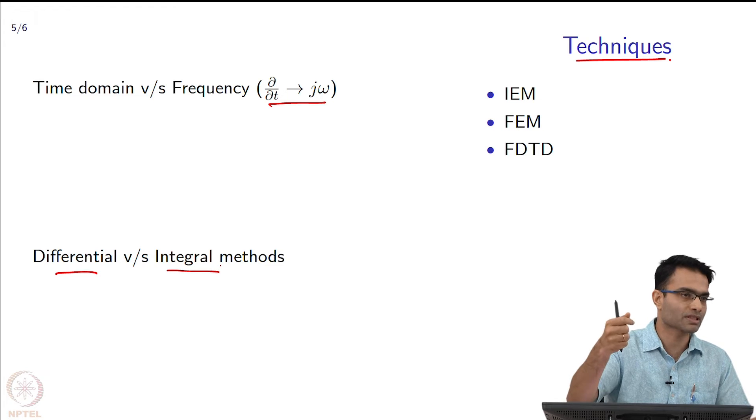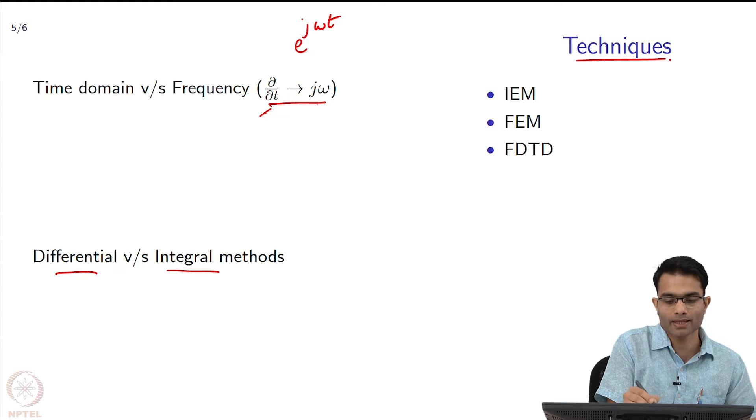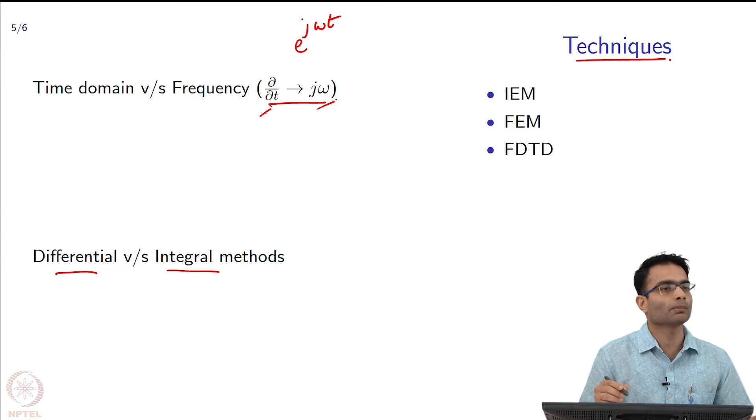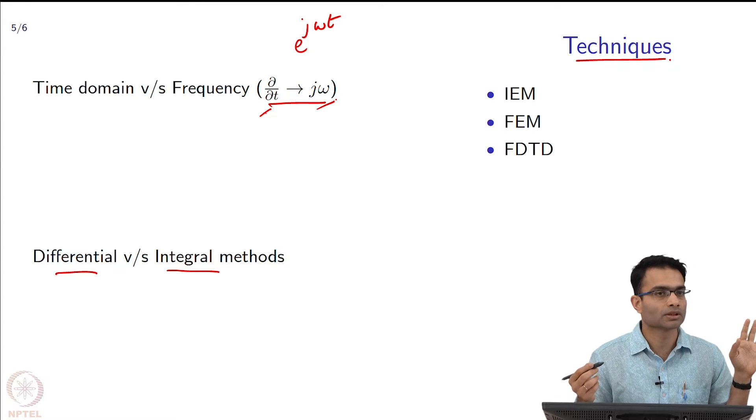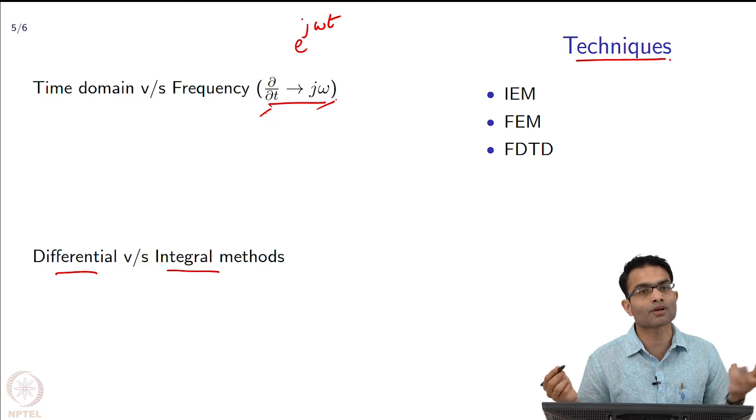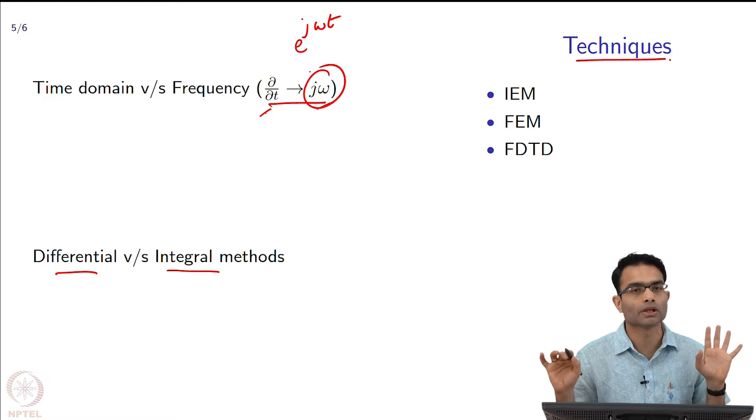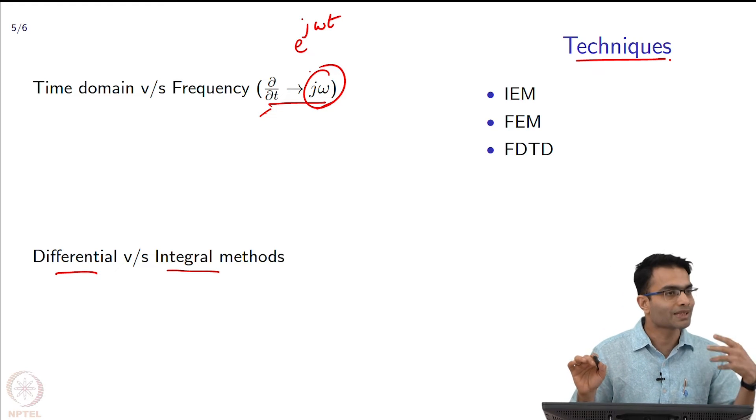If it is sending a single frequency, then if I substitute the time dependence of this form, d by dt becomes j omega, then all my equations have only spatial derivatives - the time derivatives have gone. Since the time derivatives have gone my life has become easier, I do not have to worry about time derivatives, it just becomes a constant number j omega. I have to deal only with the space derivatives.